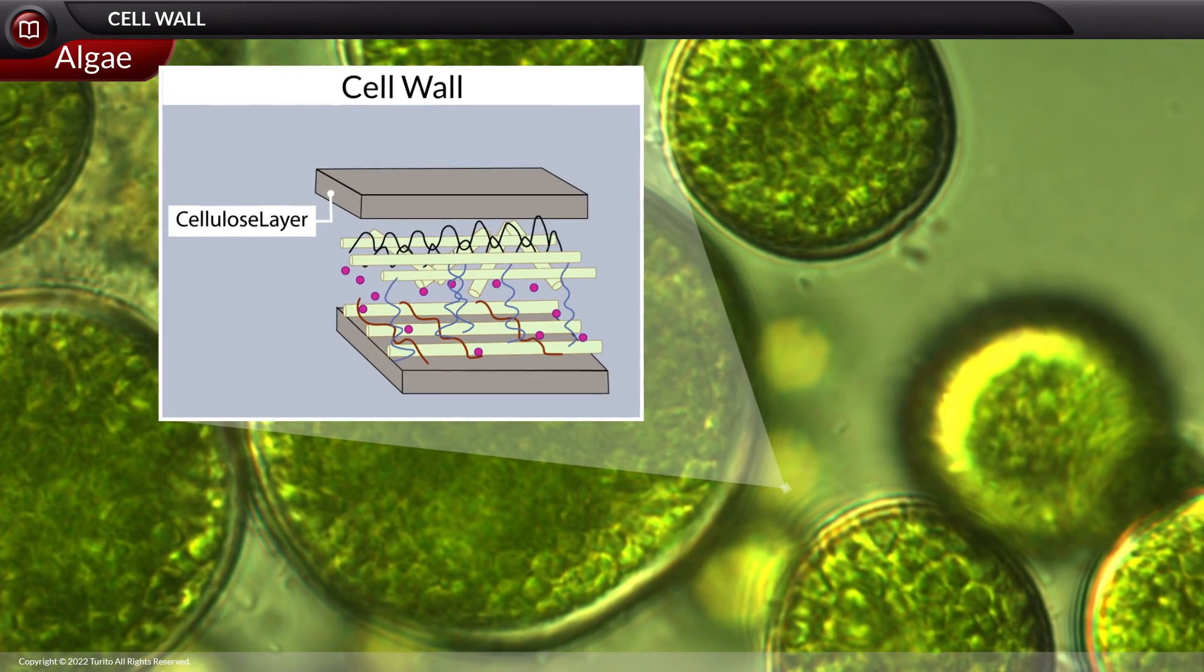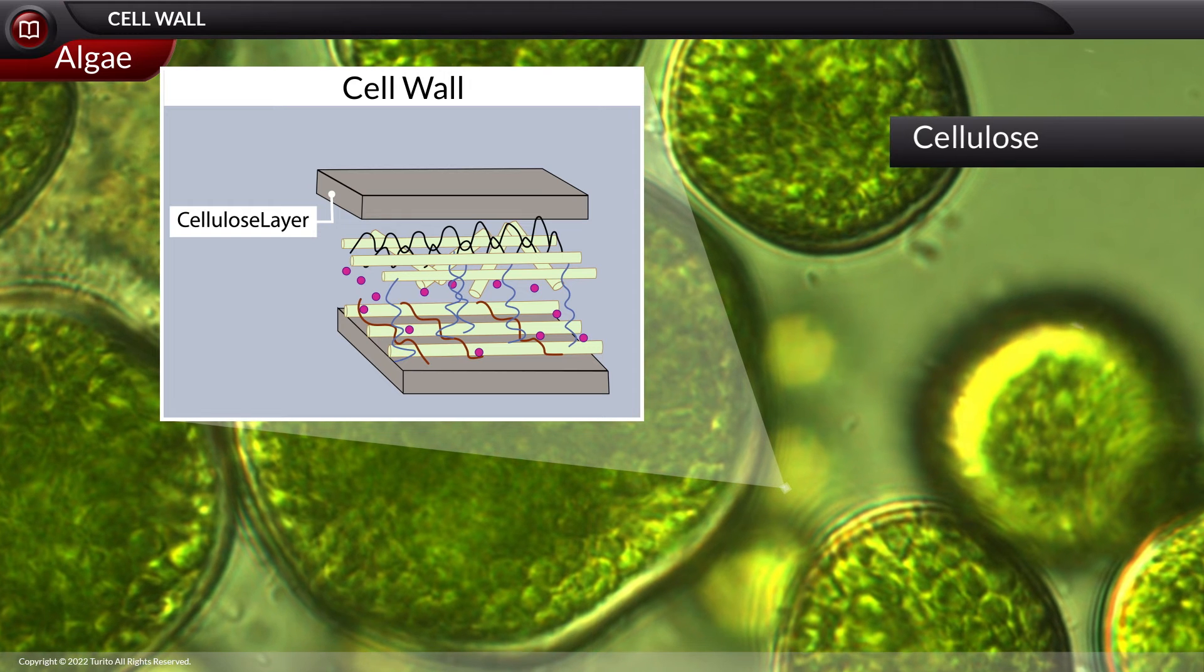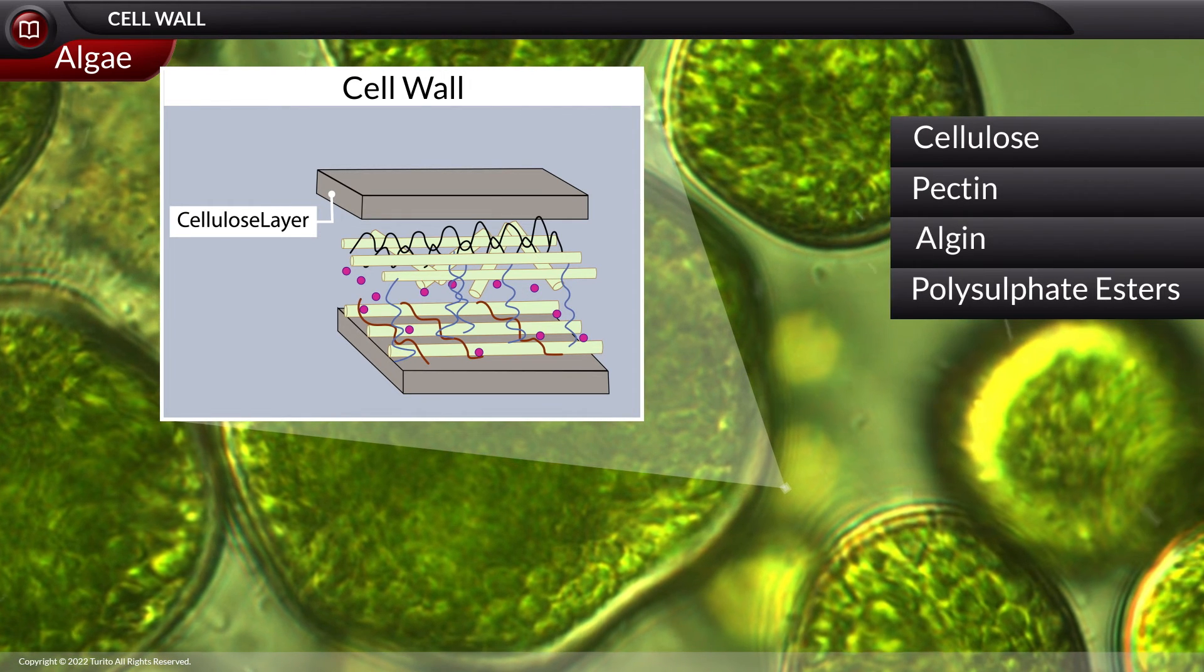Considering algae, the cell wall is made up of chemicals like cellulose, pectin, algin, and polysulfate esters.